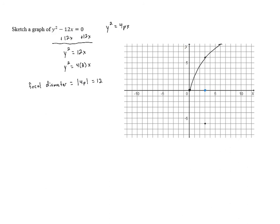So it is going to look something like that. And so this is the parabola, y squared minus 12x equals 0.